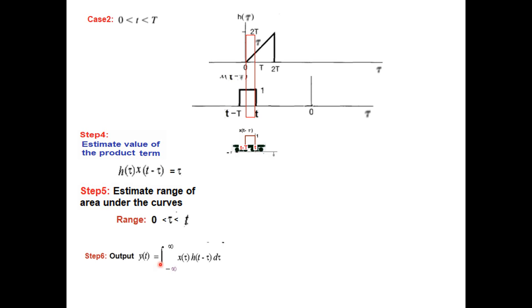So the integration for the output. Put the limit of integration. Put the value of the multiplication which was tau. Integrate. So it will become tau square over 2. Put the 2 limits. So the final answer is half T square. So this is case number 1.